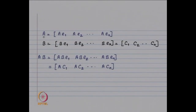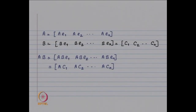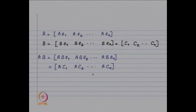Look at matrix A — its n columns are given by Ae_1, Ae_2, ..., Ae_n. For another matrix B with columns c_1, c_2, ..., c_n, when you consider the matrix multiplication A times B, its columns are given by ABe_1, ABe_2, ..., ABe_n, which equals Ac_1, Ac_2, ..., Ac_n. So the matrix product A times B is obtained by multiplying A by each column of B: Ac_1 gives the first column of AB, Ac_2 gives the second column, and so on.